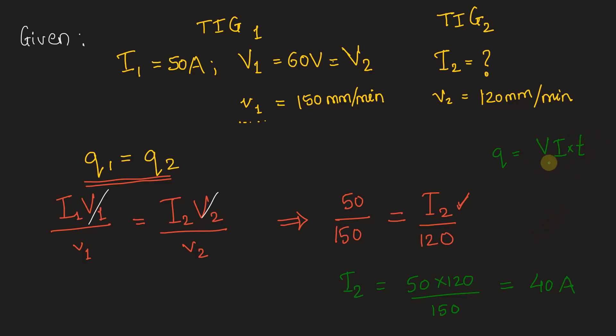This gives us the heat input during welding due to the current passed, divided by the length (since we're writing heat input per unit length). So L/T gives us VI/v, and that's what we have used here.